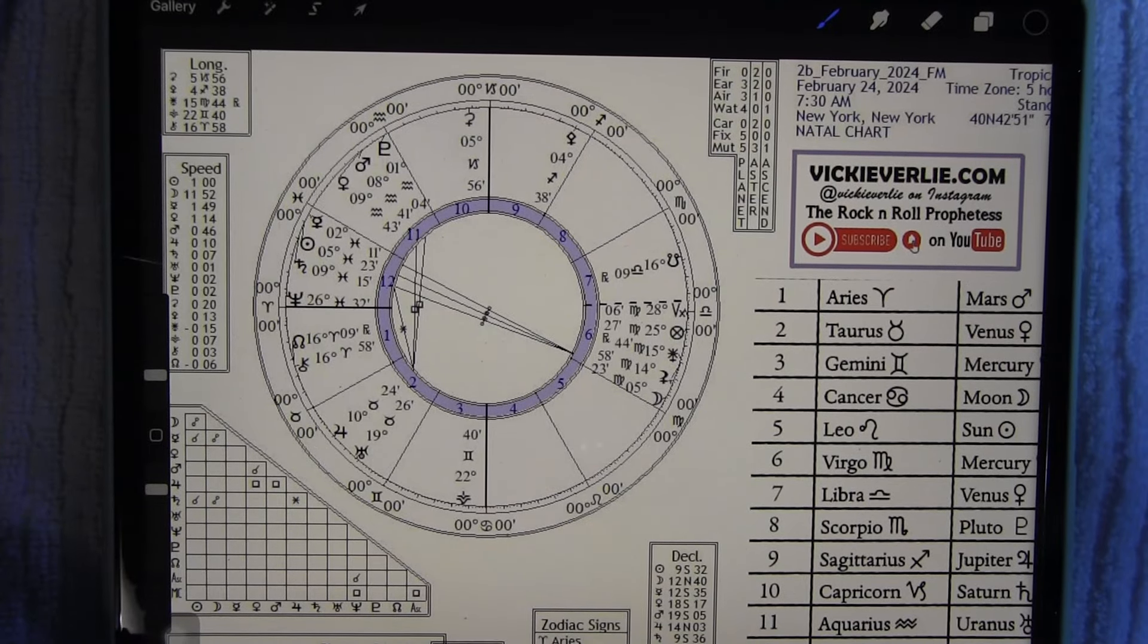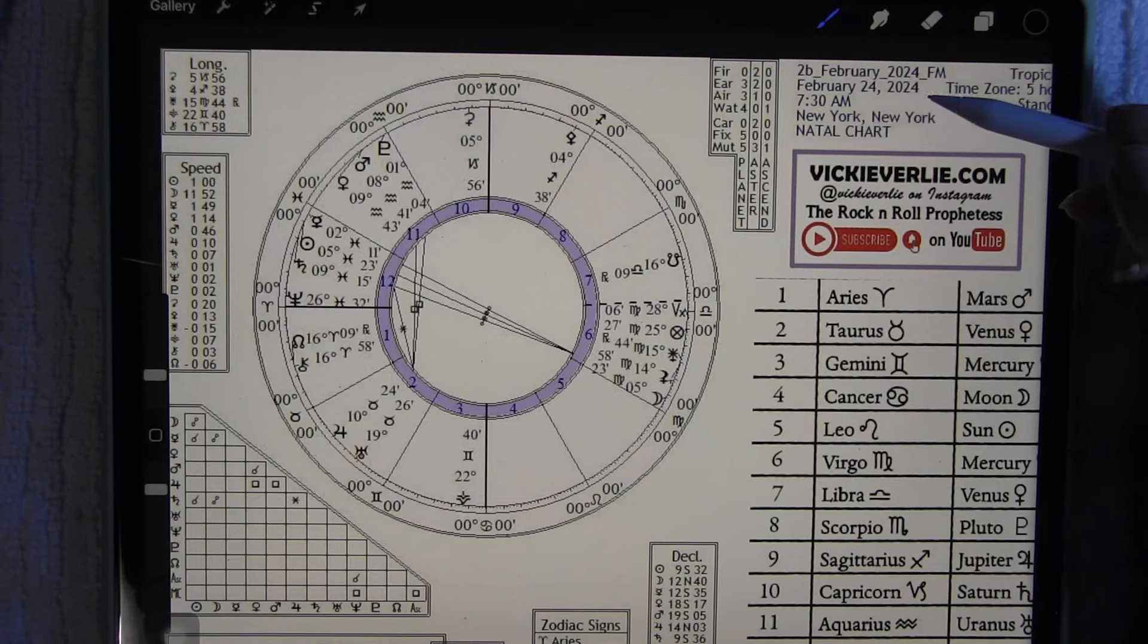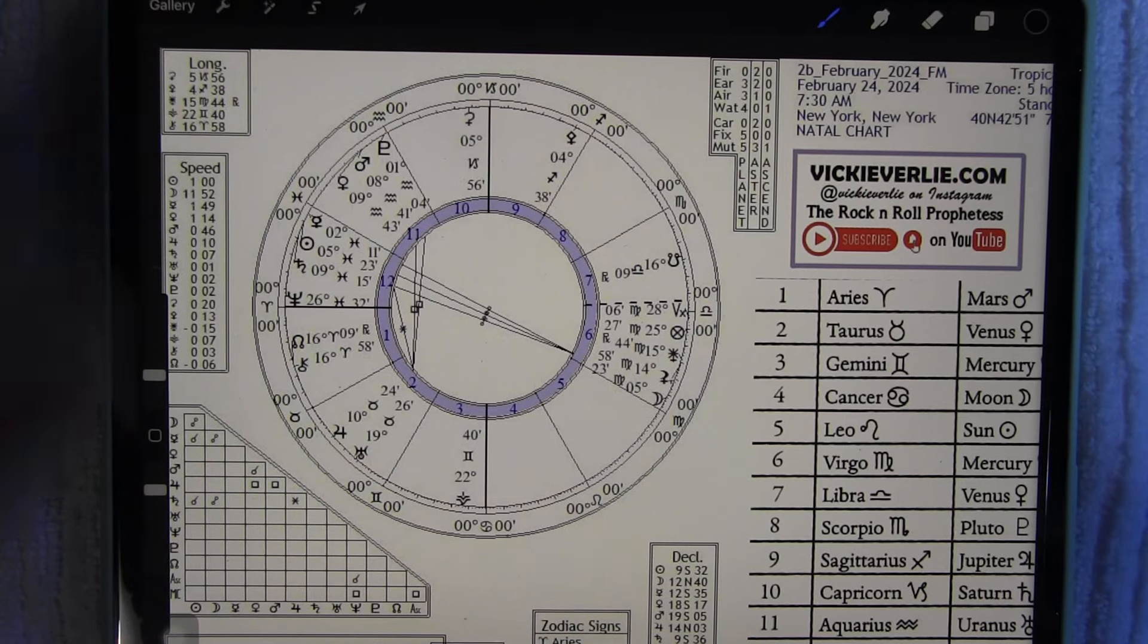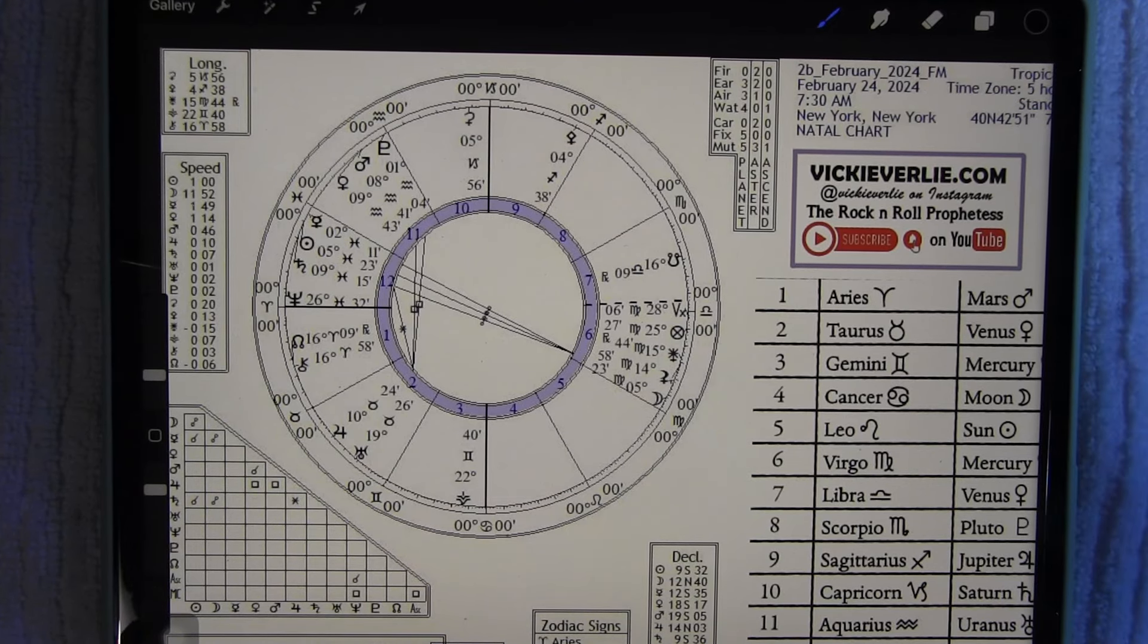Hello everyone, Vicki Verley here, Rock and Roll Prophetess. Today we're going to take a look at the full moon in Virgo, which is happening on February 24th, 2024, Eastern Time, but times will vary depending on your location.